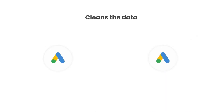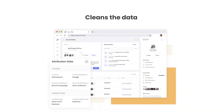Thirdly, Attributer cleans the data as well. So even if some of your ads were tagged with UTM source equals Google and others were tagged with UTM source equals AdWords, Attributer would assign them to the paid search channel regardless.